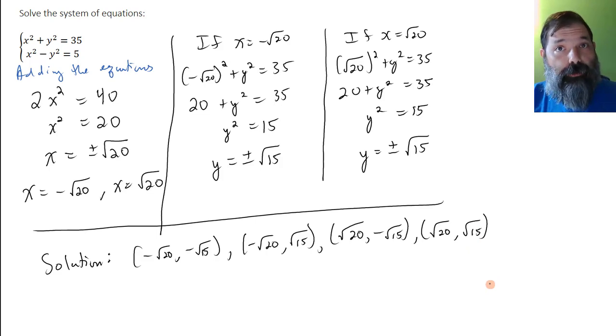We could verify this by using an advanced graphing calculator to graph each of these relations, and we would see that all four of these are valid solutions for the system.